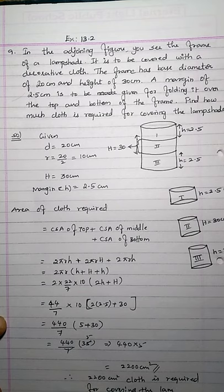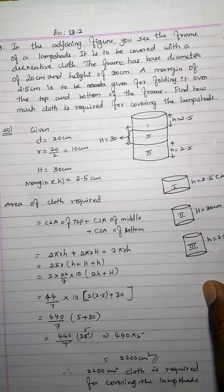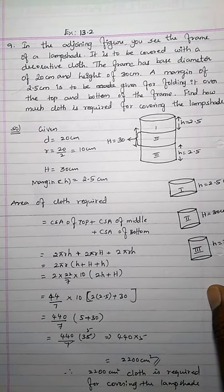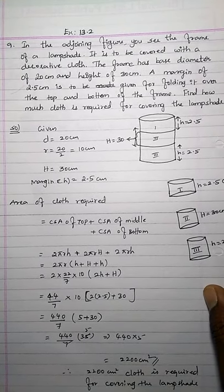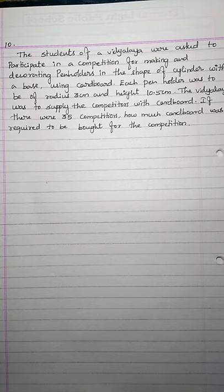Therefore, 2200 square centimeters of cloth is required for covering the lamp shade. Hope you understand this. If you have any doubt, please let me know in the comment section. Let's go to the next question — question number 10.